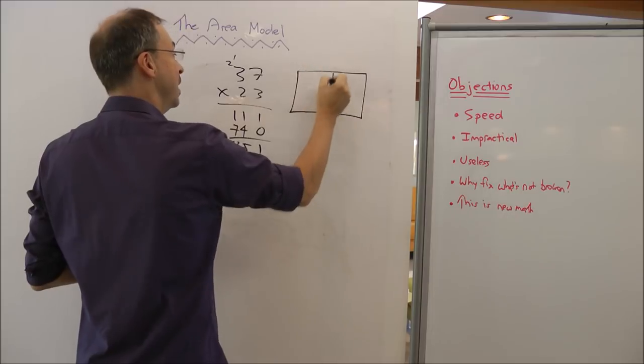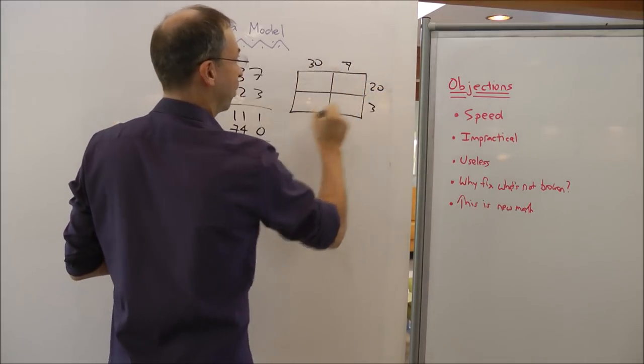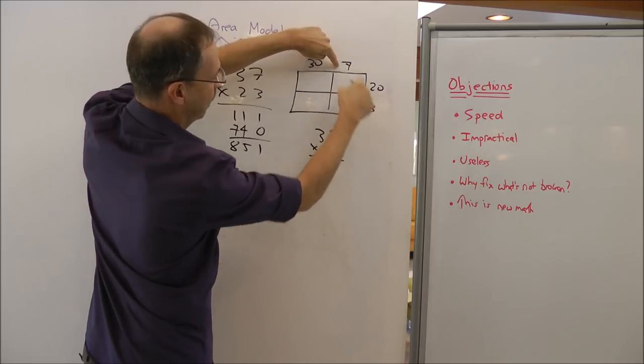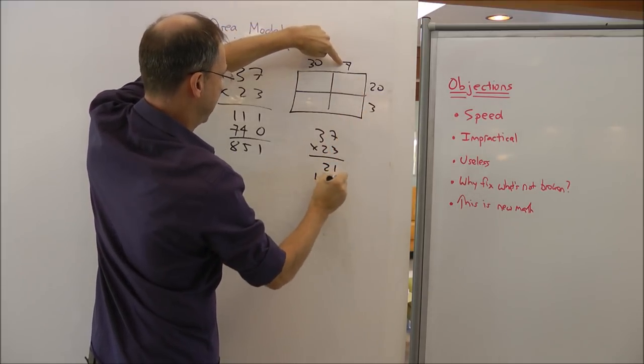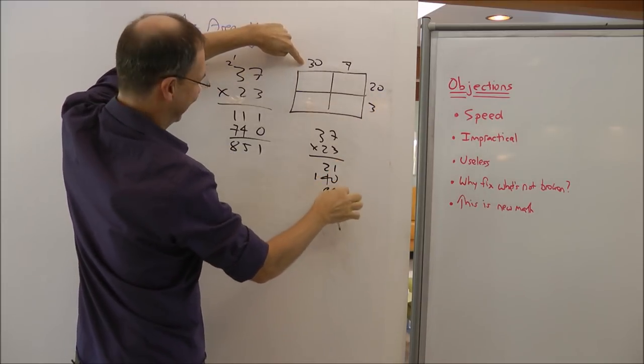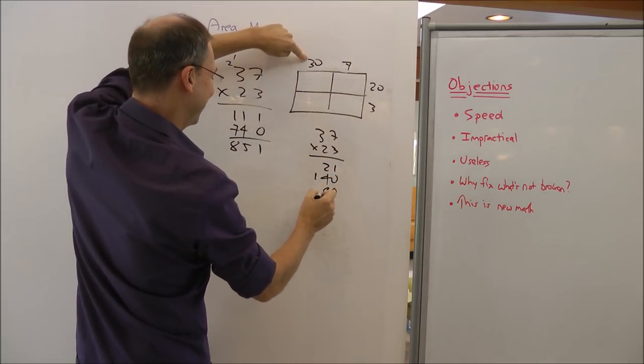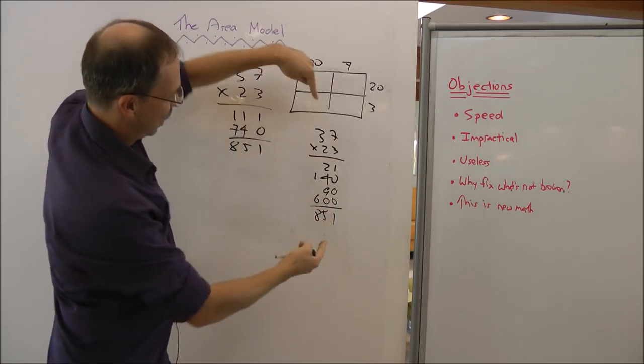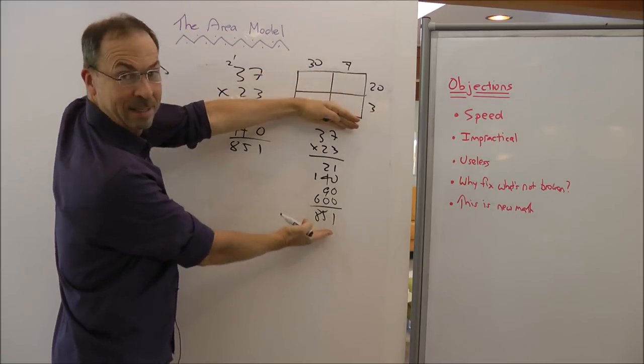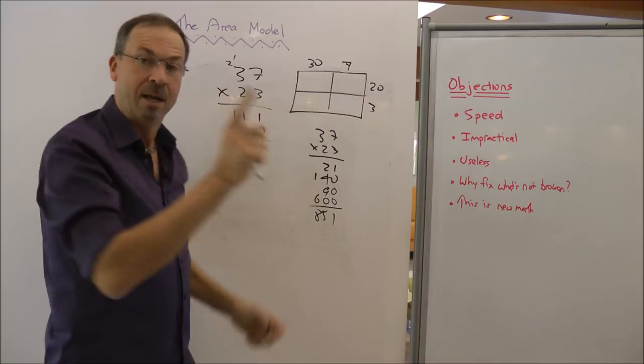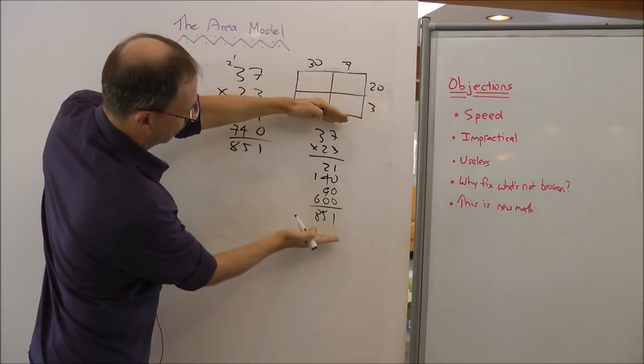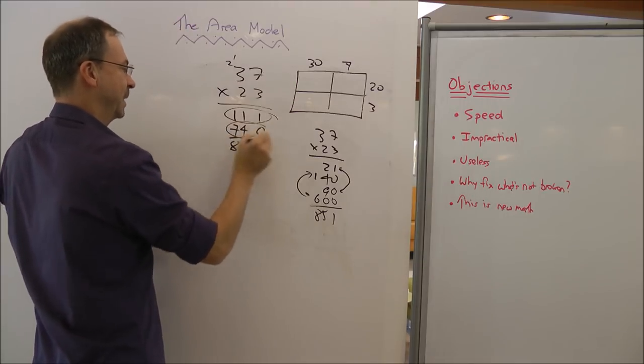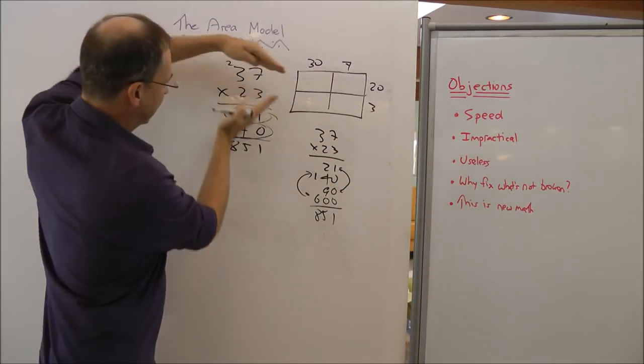You write 3 times 7 is 21. I don't think you write 21. I think you just write 1 and put a 2 up there. You go 3 times 3 is 9 plus another 2 makes 11. 2 times 7 is 14 but you have to put a 0 here and you write 14 and a 1. 2 times 3 is 6 plus another 1 makes 7 so the answer must be 851. That was very complicated and it's very hard for us adults to not equate familiarity with understanding. We are very familiar with this therefore we feel we understand it but imagine teaching that for the very first time. That is very, very hard.